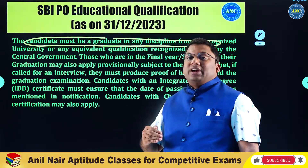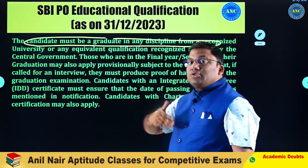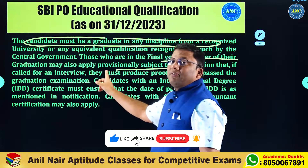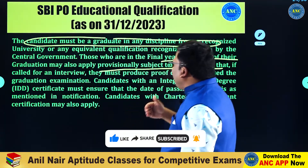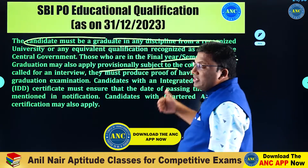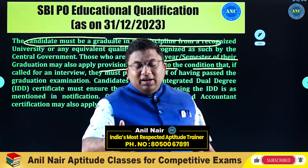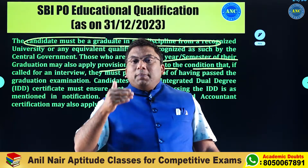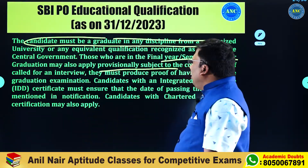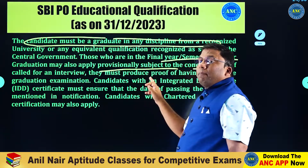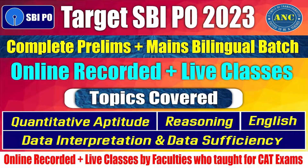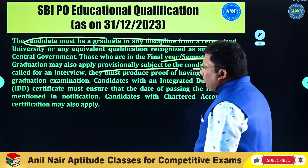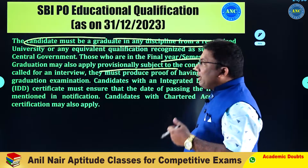Can a final-year student write this examination? Those who are in the final year or final semester of their graduation may also apply provisionally, subject to the condition that if called for an interview, they must produce proof of having passed their graduation. Prelims will happen in November and mains in January, and then the interview in about two to two and a half months. If you qualified for prelims and mains and are sitting for an interview, you need to show proof that you have completed your graduation.